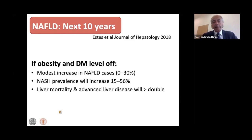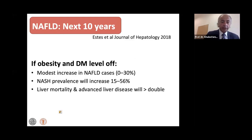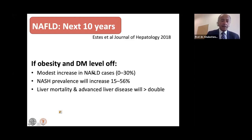NAFLD is a condition that is here and staying with us for a while. A modeling study by Estersson and colleagues, based on the assumption that obesity and diabetes level off — which is not the case as populations globally are getting larger — suggests there may still be a modest increase in NAFLD prevalence of around 30%. But more seriously, the prevalence of NASH will continue to increase significantly, and mortality from advanced liver disease will more than double over the next 10 years.